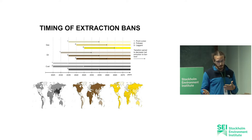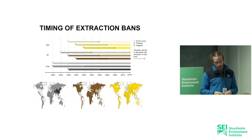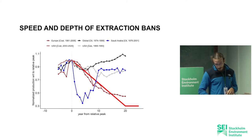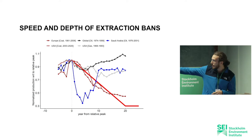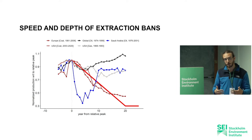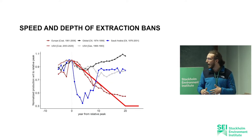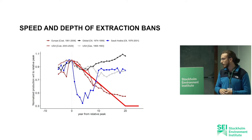We take into account that different fuels are more difficult to ban because they are more important for the energy transition, and that different fossil fuels are more carbon intensive. So we ban first coal and then oil and gas. We also keep into account the existence of a residual production. The red line is the exogenous trajectory we impose when constraining global production, and the other lines show historical precedent to illustrate how ambitious these bans are.